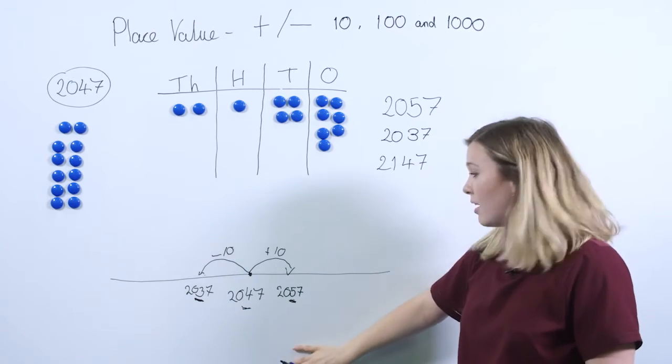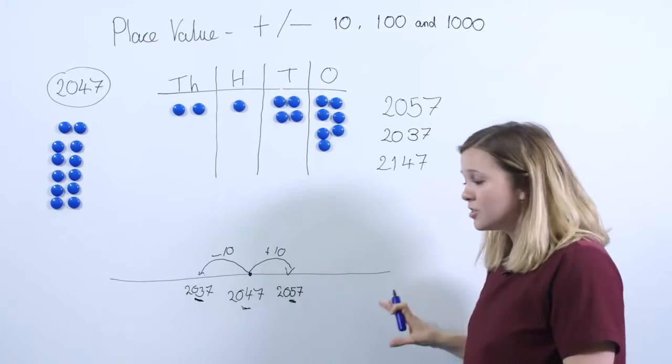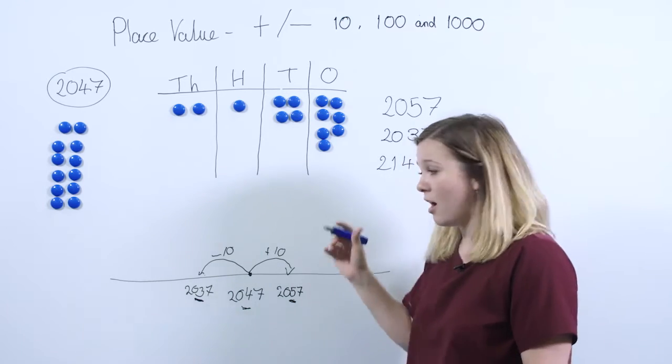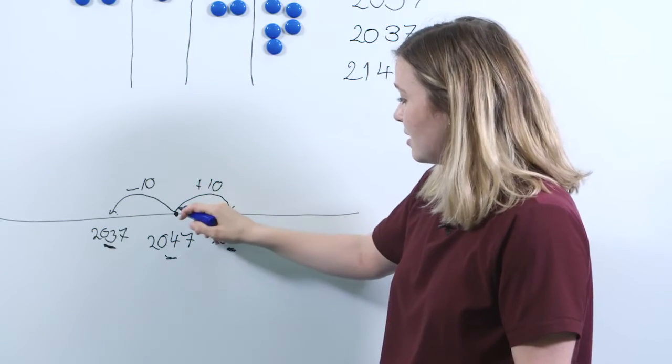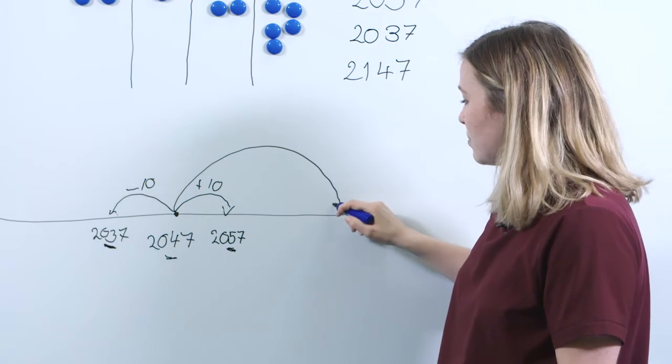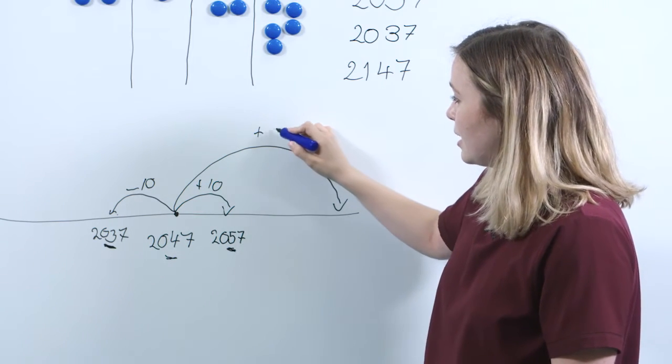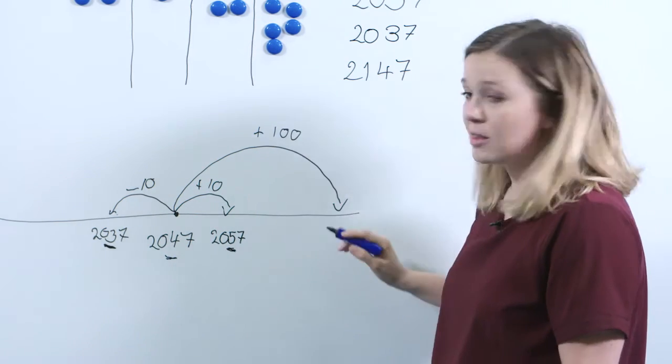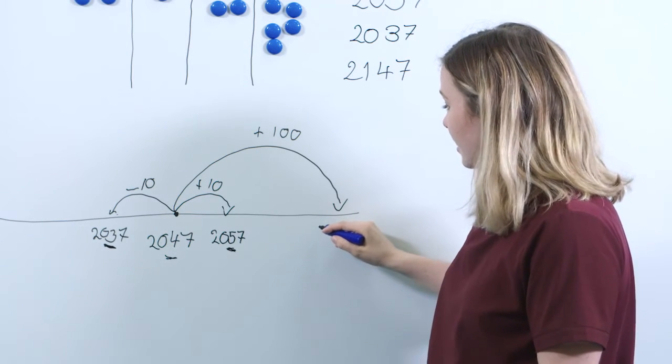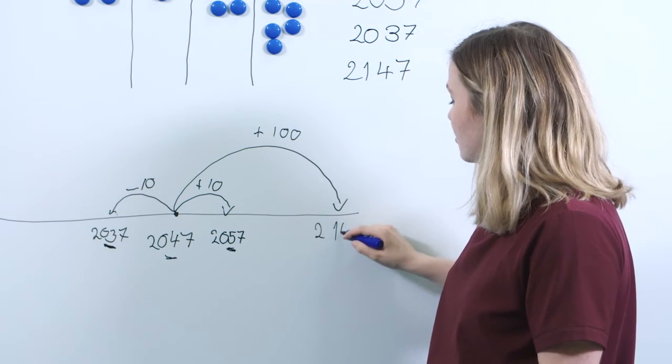And if we return to our number line, that's where you can show a larger jump to reinforce that you're adding a hundred. So rather than just adding 10, I'm going to do a much bigger jump, go all the way up here, label this as adding a hundred, and the pupils should be able to see that you're getting to 2147.